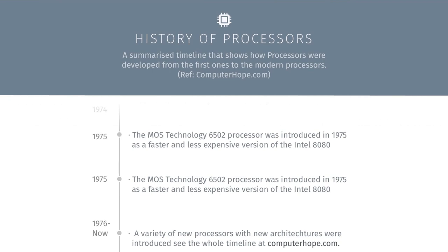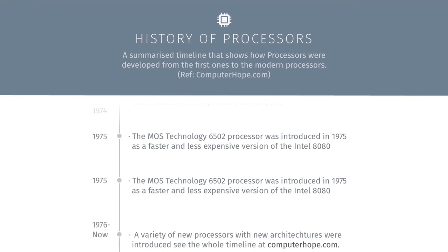We won't talk much about the MOS technology, but it was then later improved just that same year. And from 1966 to now, a lot of new processors have come up, a lot of new architectures, a lot of new things to know. But we won't look at all of that in detail. Let's get started with the architectures.